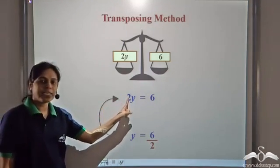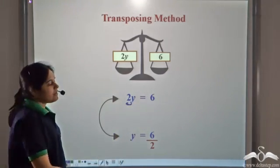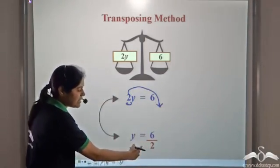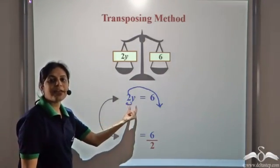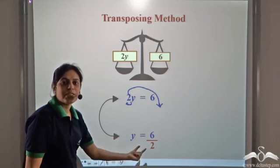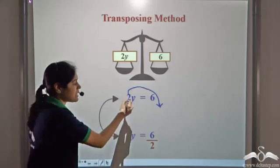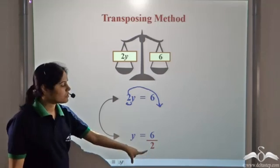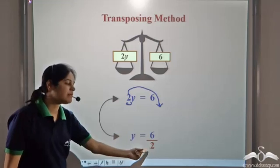We can come directly from here to here. We have 2 into y on the left hand side. We can take this 2 to the right hand side and write the right hand side as 6 divided by 2. So 2 multiplied by y on the left hand side can be written as 6 by 2 on the right hand side. That is, dividing both sides by 2 is the same as taking this 2 to the right hand side and dividing the right hand side by 2.